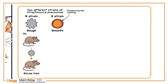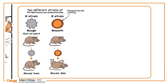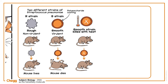When Griffith injected a healthy mouse with the S strain, the mouse caught pneumonia and died within a few days. The S strain is virulent. Moving to the next stage of his experiment, Griffith took the living dangerous S strain and killed the bacteria with heat. As expected, when a mouse was injected with the heat-killed bacteria, it lived.